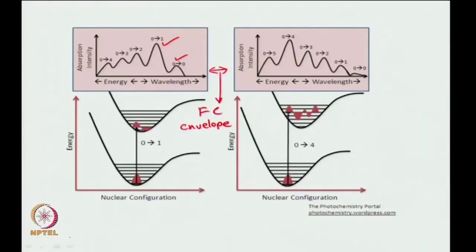Coming back to the slides now. We looked at the Franck-Condon envelope. We talked about this Franck-Condon envelope and said that you do not have only one transition — instead you have a series of transitions. This series results because the electron density is not at only one position; you have electron density throughout. It is a delocalized thing, and hence transitions can occur throughout the band wherever you have the wave function. This gives rise to your Franck-Condon overlap.